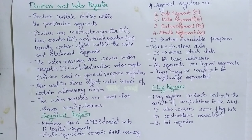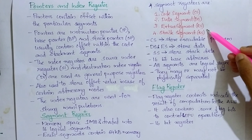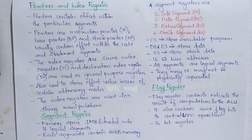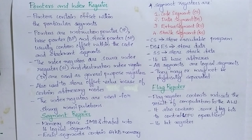The CS, DS, SS, and ES registers contain the segment addresses for the code, data, stack, and extra segments of the memory. All these segments are logical segments and they may or may not be physically separated — they can be physically separated or they cannot be separated.